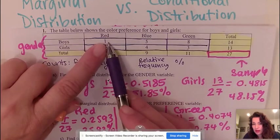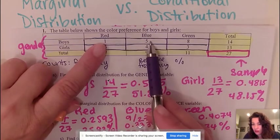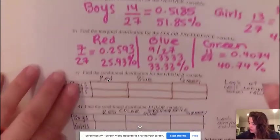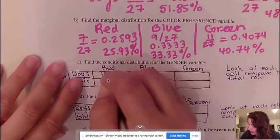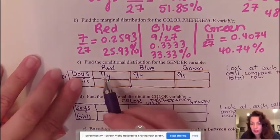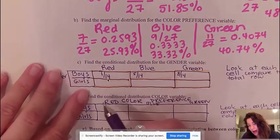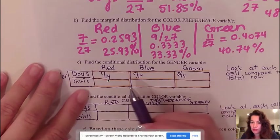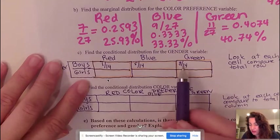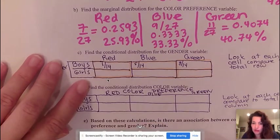So each cell is going to be the count on the inside divided by its total row. So for example, this will be 1 out of 14, this will be 5 out of 14, and this will be 8 out of 14. So I can actually just rewrite it here as 1 out of 14, 5 out of 14, 8 out of 14. Now these numbers don't really mean anything. I have more information when I convert it to a percentage. But notice when you add all this up, it adds up to 14 out of 14, which is 100%.